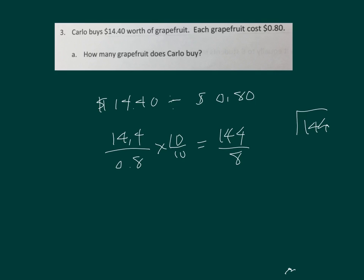A long division problem. Eight goes into fourteen one whole time. One times eight is eight. Fourteen minus eight is six. Bring down the four. Sixty-four divided by eight is eight. Eight times eight is sixty-four, and sixty-four minus sixty-four is zero. So we get eighteen. He can buy eighteen grapefruit.